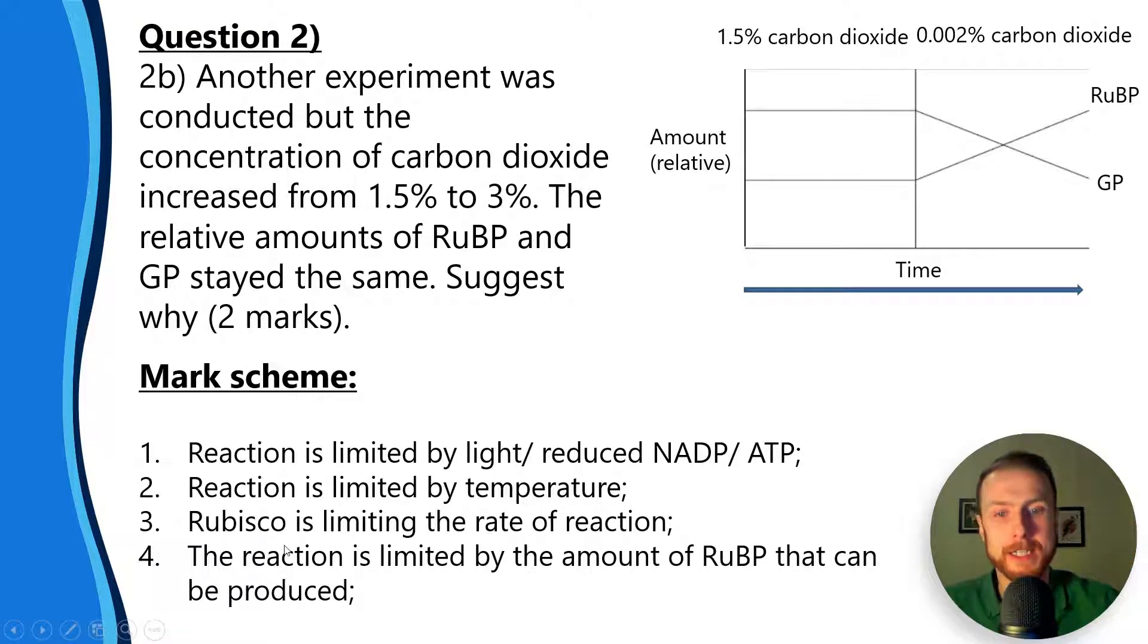Next up, rubisco is limiting the rate of reaction. So all of the enzyme's active sites may be occupied, so adding more substrate won't lead to an increased rate of reaction. We've seen those enzyme-substrate graphs where they go up and then plateau when all the active sites are occupied.